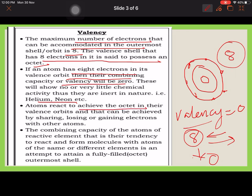Atoms react to achieve the octet in their valence orbit and that can be achieved by sharing, losing, or gaining electrons with other atoms. Generally what they do is they lose or gain electrons by doing so.